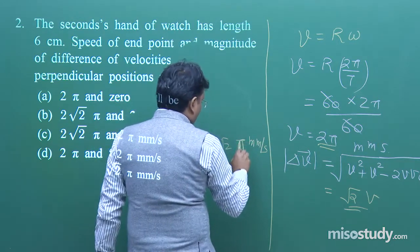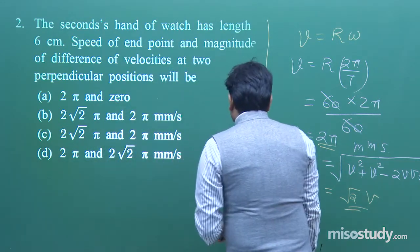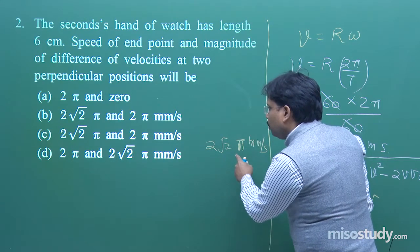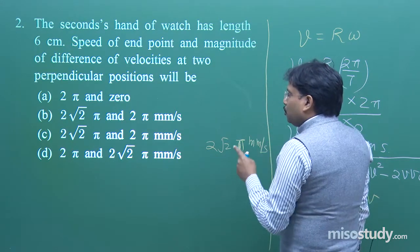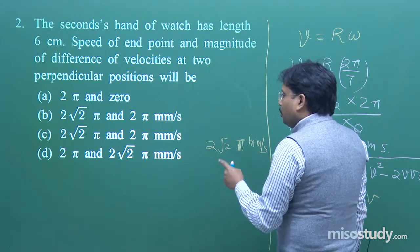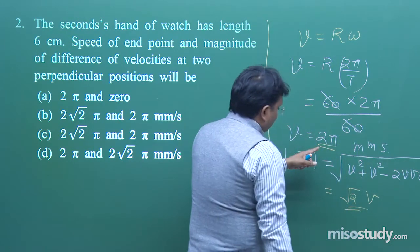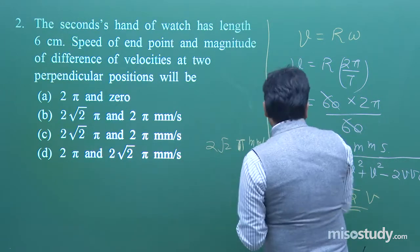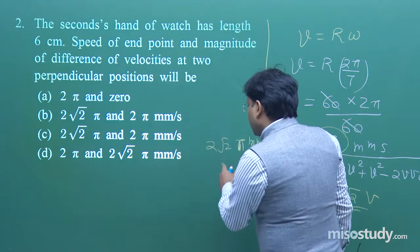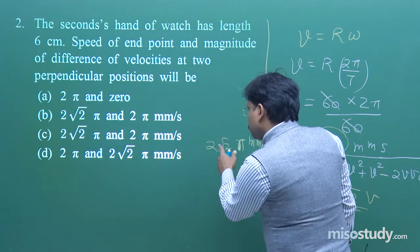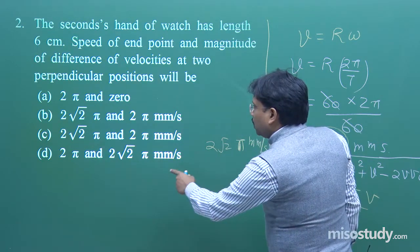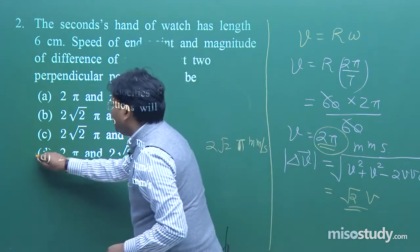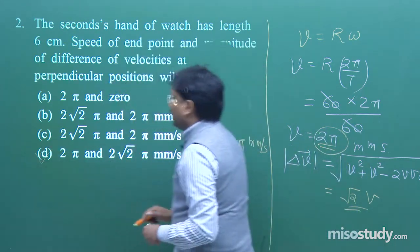Matching with the options: one answer is 2π and the other is 2√2π. So D is the correct answer.